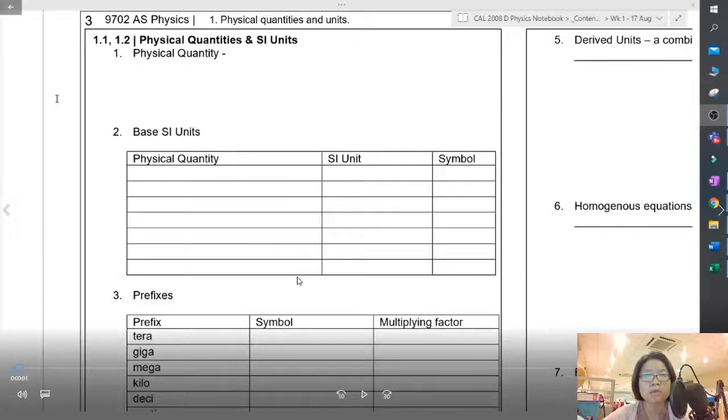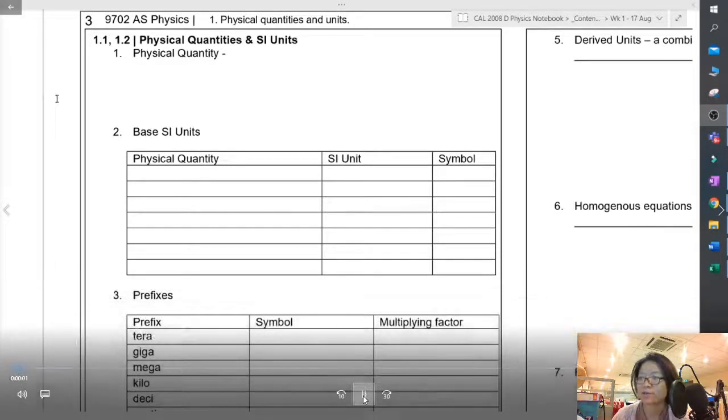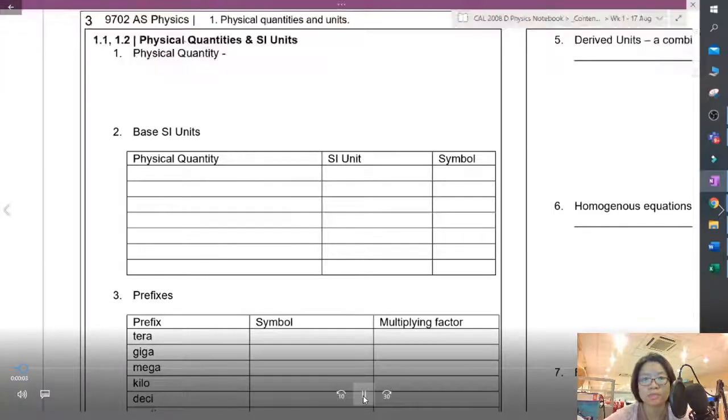Physics is supposed to measure physical quantity, right? In physics, if we cannot measure, we don't study. So physical quantity will be defined as something that we can measure.